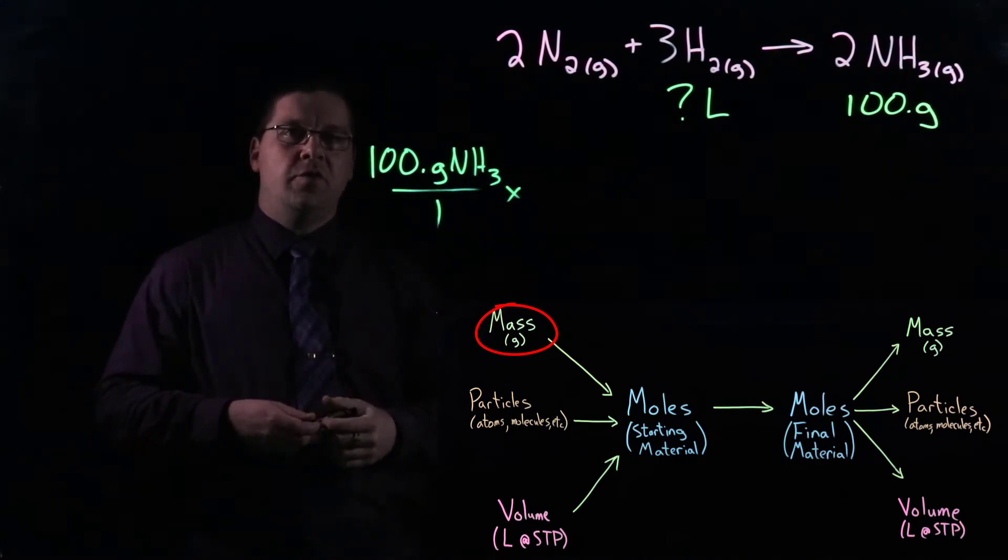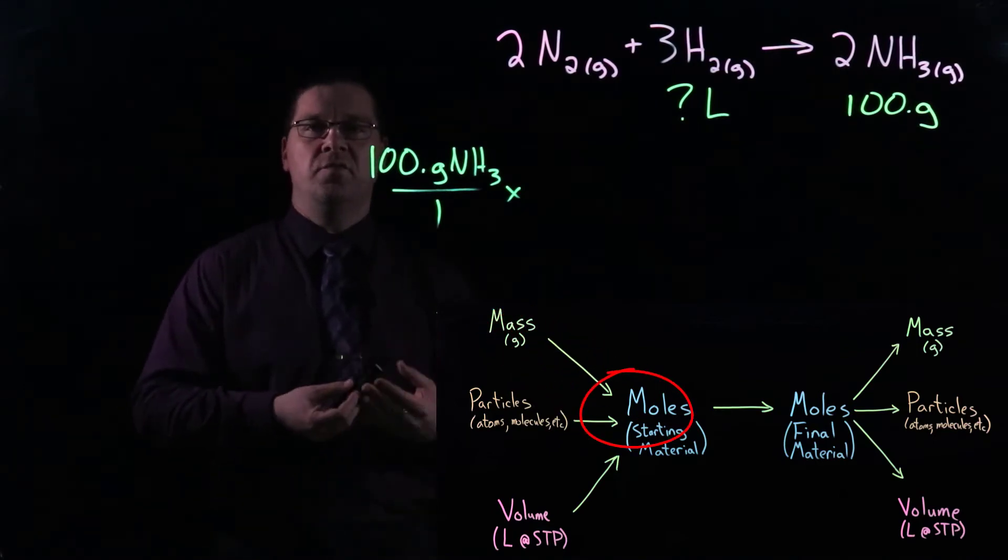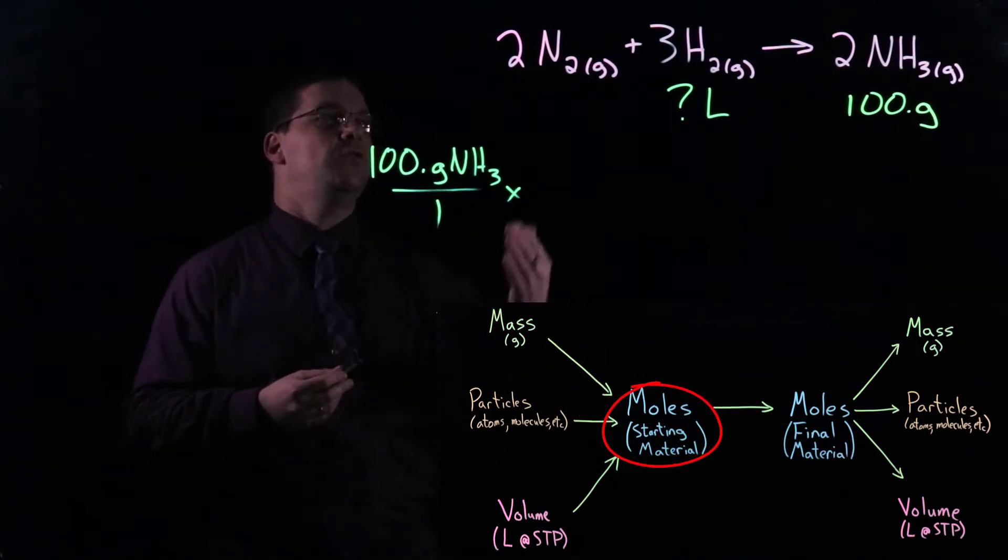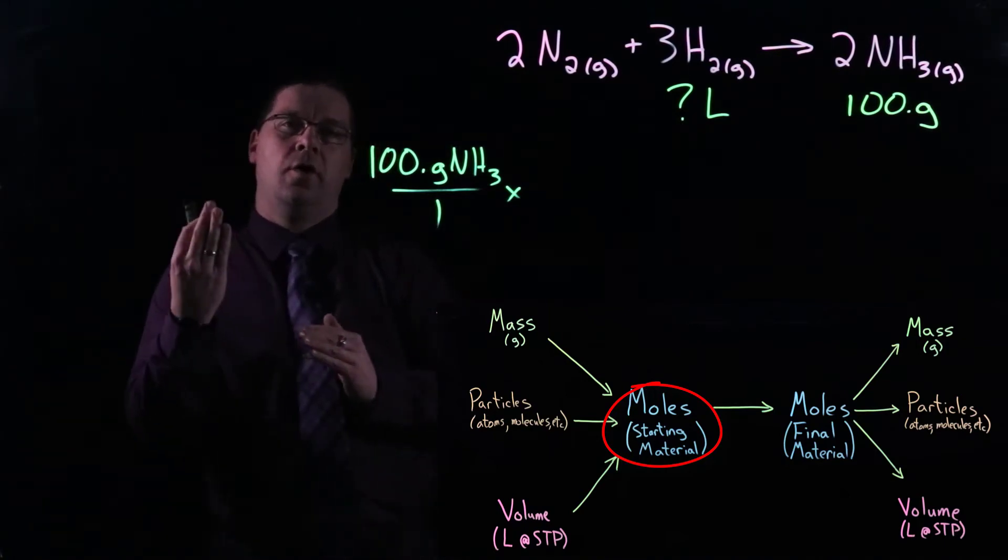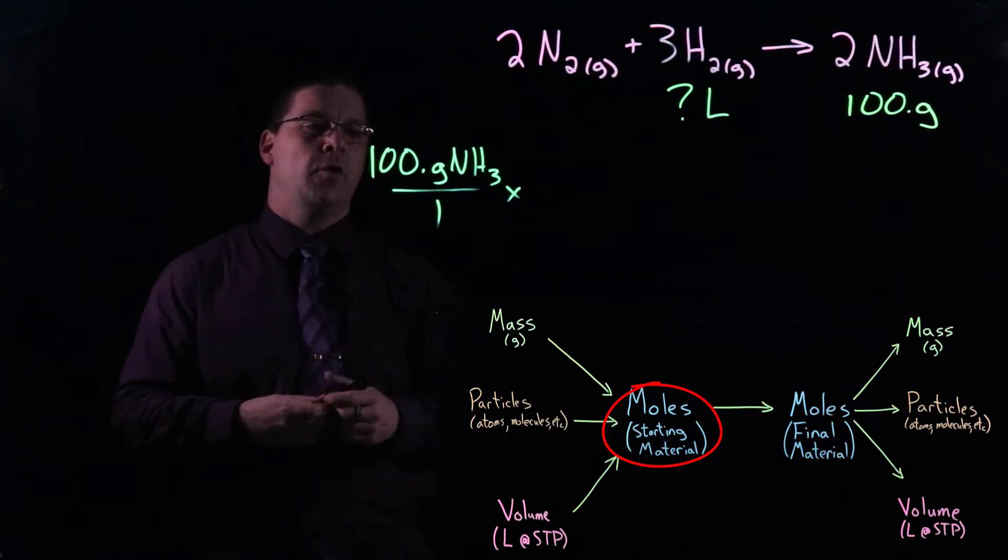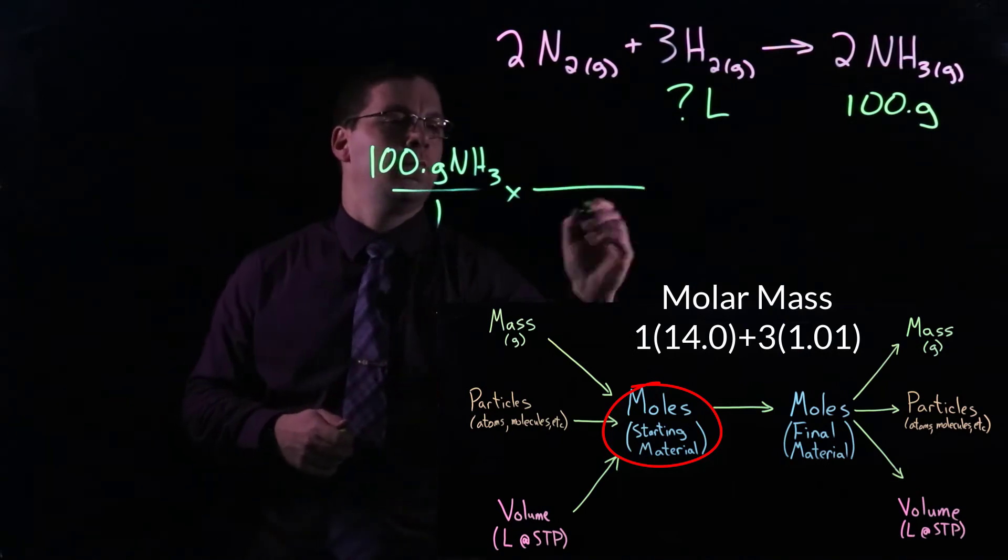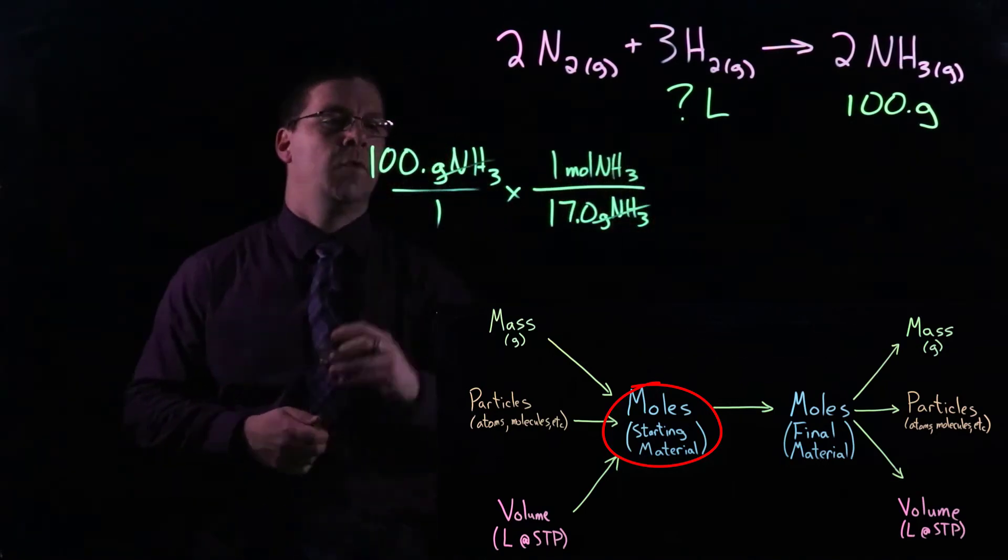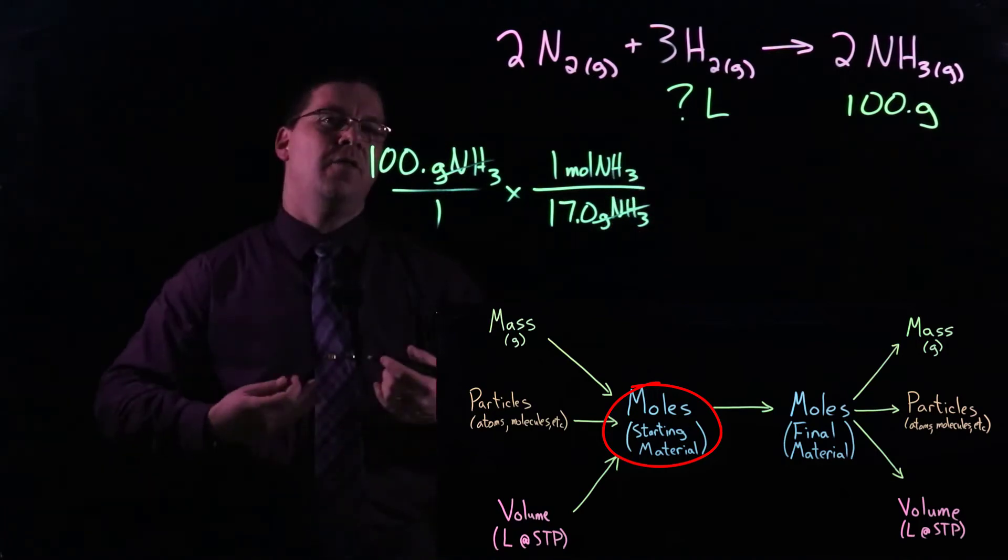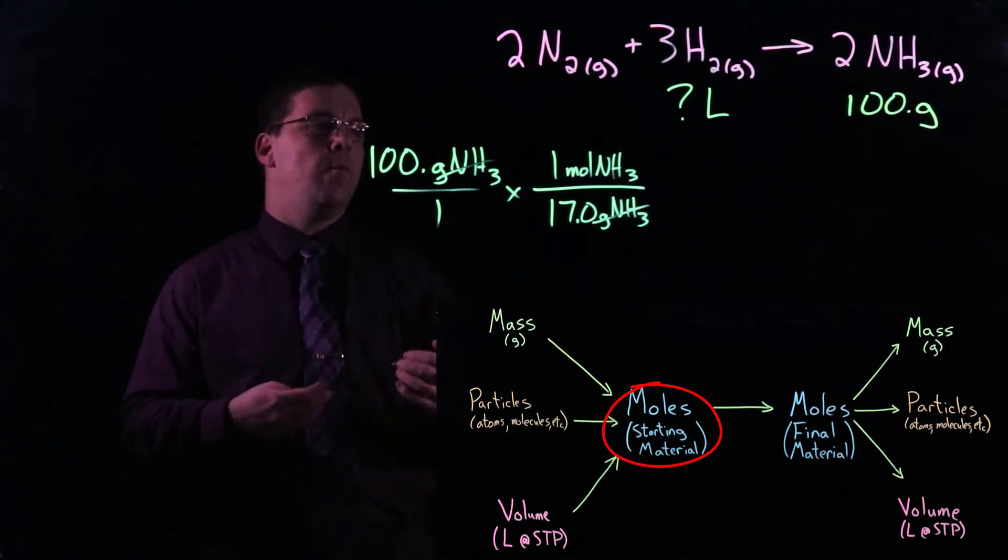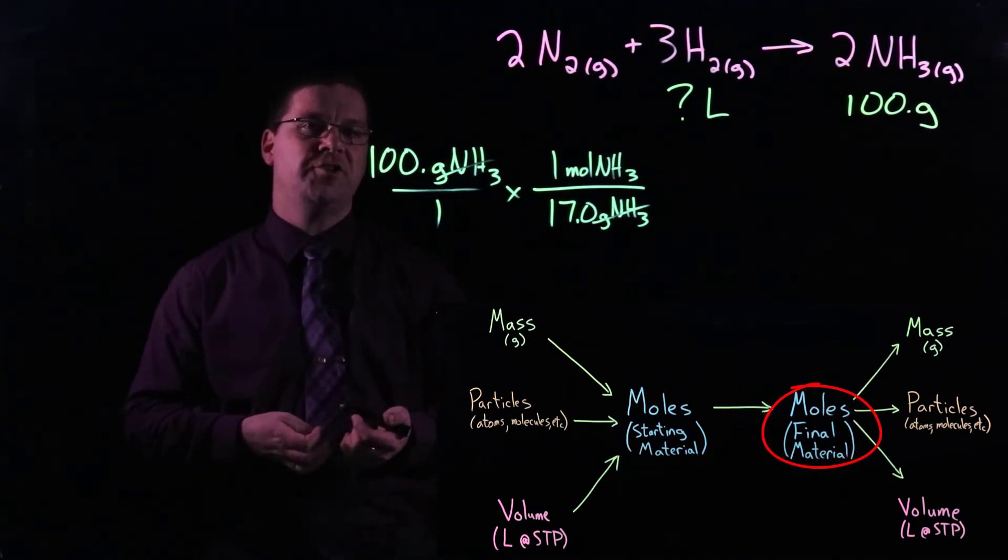And the first thing that we need to do is we need to convert the given quantity that we have into units of moles because that's what allows us to use our balanced equation to make the relationship between the starting material and the final material. So to go from grams to moles of ammonia, we need to use ammonia's molar mass. We set up the molar mass so that the grams of ammonia are on the bottom. The next step is to convert from moles of our starting material to moles of our final material. And so this is our mole ratio step.